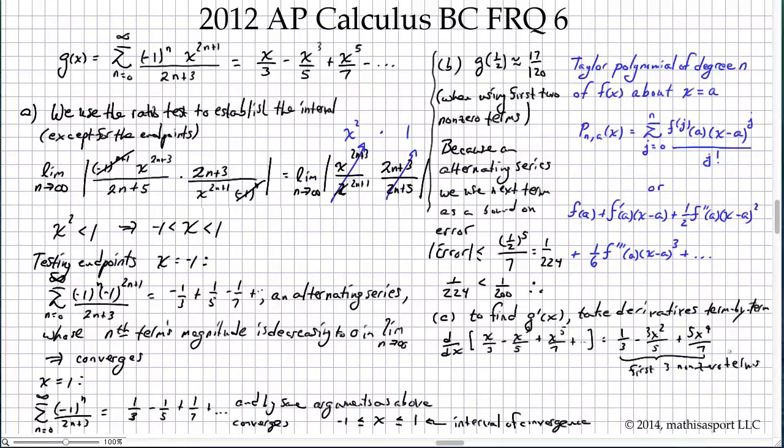What about the general term? The general term is just d/dx of the general term: negative 1 to the n, x to the 2n+1, over 2n+3. That's just negative 1 to the n over 2n+3. Those terms come out front, they're just constants with respect to x. The only thing we do is use the power rule, we pull down the 2n+1 times x to the 2n. That's it.